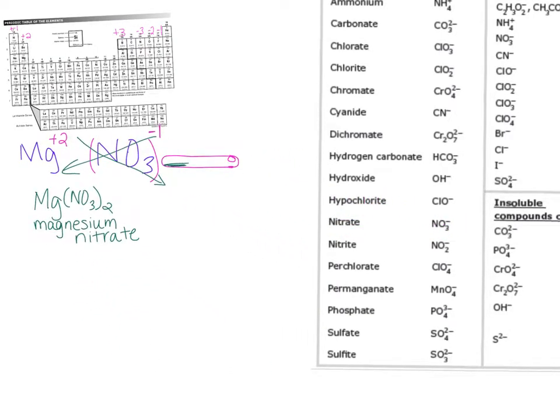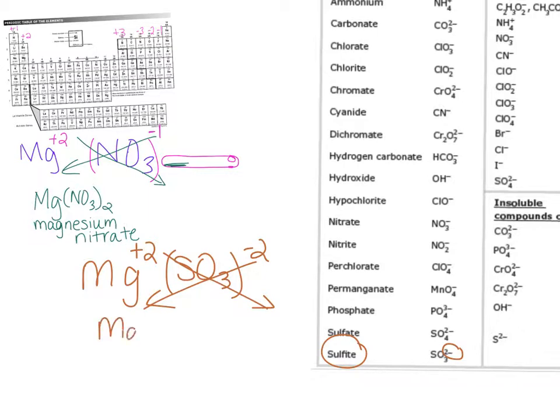Another example could be something like, let's do magnesium again, but let's mix them with sulfite. So you can find sulfite, that is SO3, and you notice that sulfite has a minus two charge. So magnesium again has the plus two. We have a minus two over here. When we crisscross, we end up with Mg2, and we have our SO3 with a two on the outside.